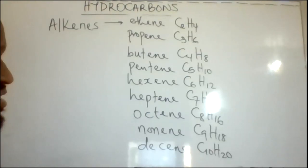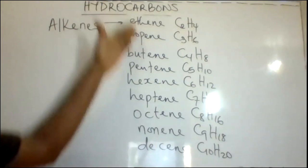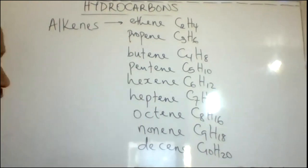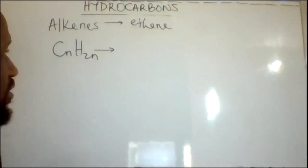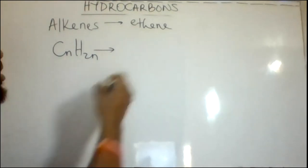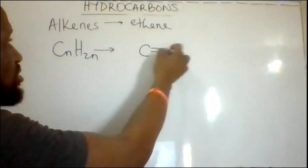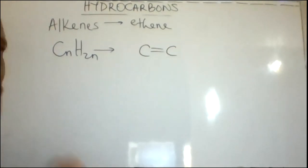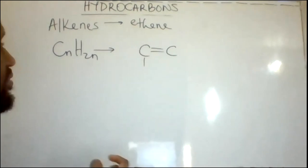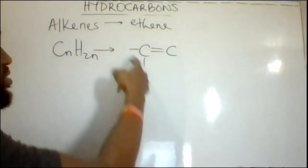Moving on to the alkene series: alkenes are unsaturated hydrocarbons. The first ten members are ethene, propene, butene, pentene, hexene, heptene, octene, nonene, and decene. The general formula for all alkenes is CnH2n. Alkenes must have at least one double bond. Therefore, the first alkene must have two carbon atoms, because there can be no double bond between carbon and hydrogen — two carbon atoms makes the first alkene, ethene. Carbon can take four bonds, so I bring two extra bonds to each carbon atom.